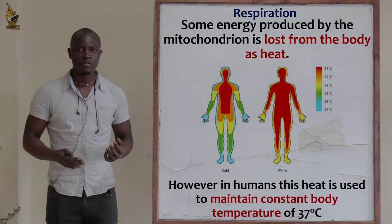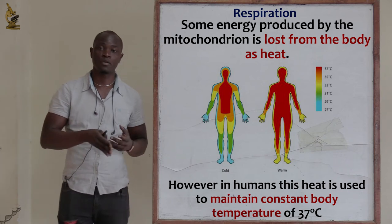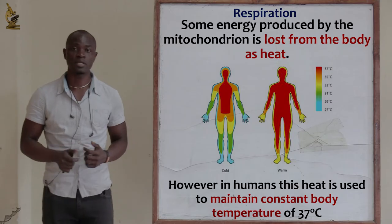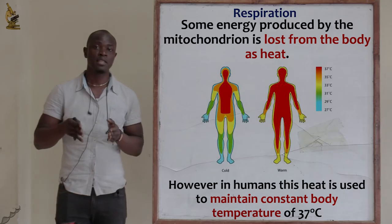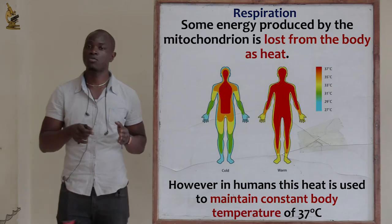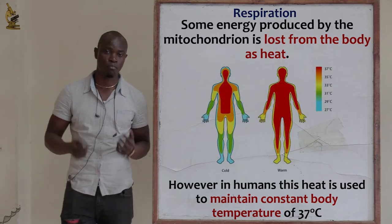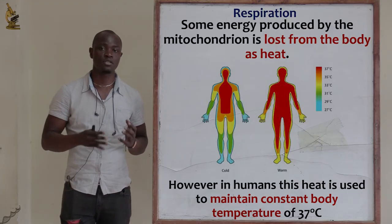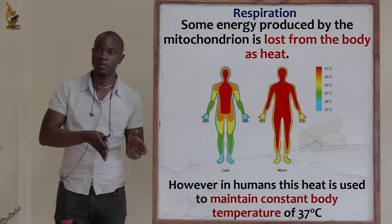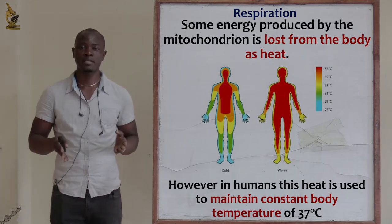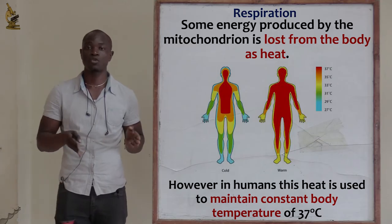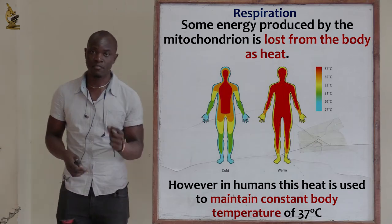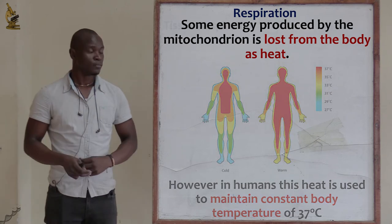This heat lost in the process of respiration is mainly essential in human beings, because it is used to keep the body warm — or rather, to help maintain a constant body temperature. The bodies of human beings use this heat in order to maintain body temperature back to normal, which is 37 degrees Celsius.